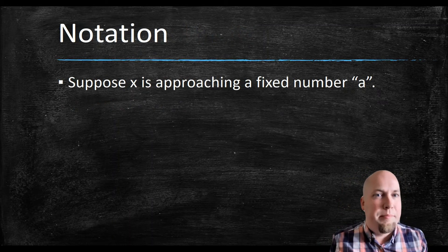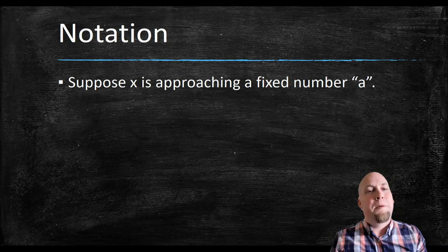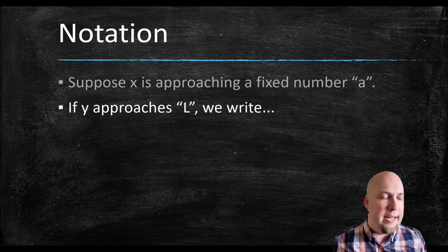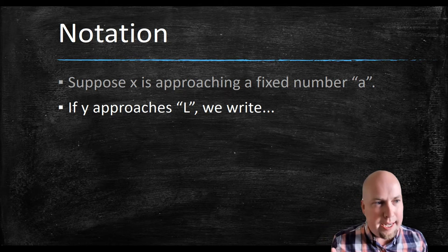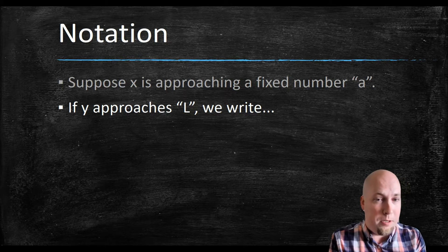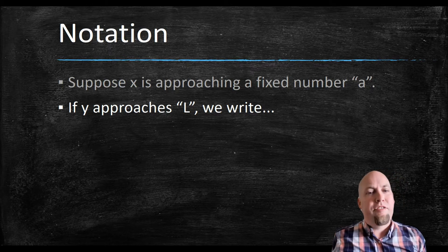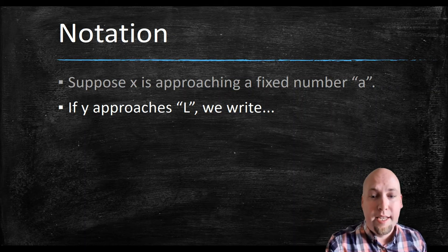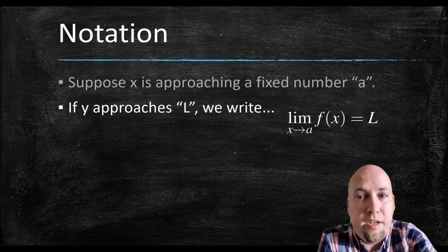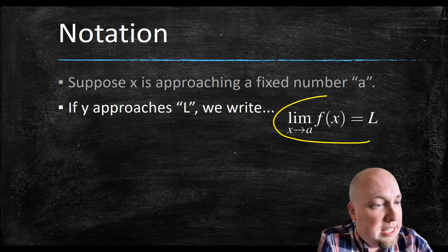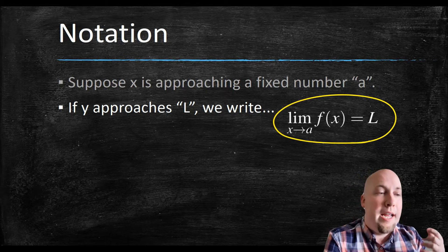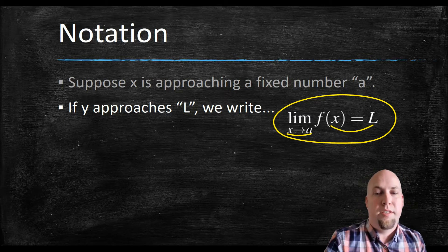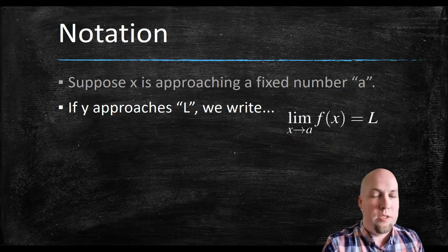To give ourselves notation: suppose the x value is approaching some particular fixed number, which we'll call A. In our previous example, A was 4. If the y value — the output f(x) — is approaching L, then we write: limit as x approaches A of f(x) equals L. What that means is as x gets closer to A, f(x) gets closer and closer to L. As x goes to A, the y value goes towards L.